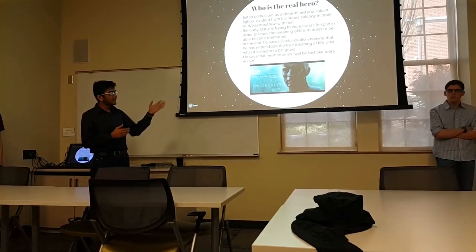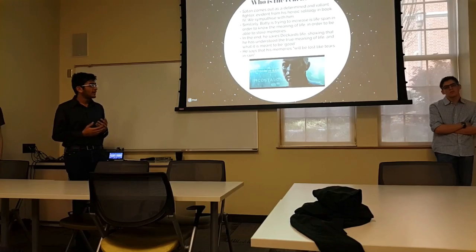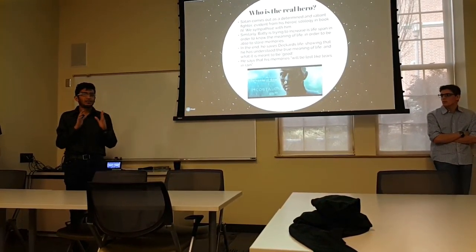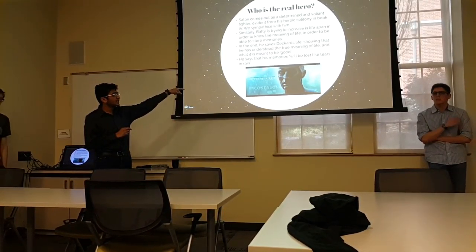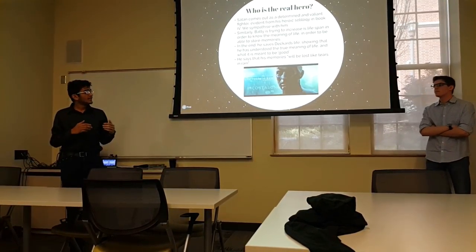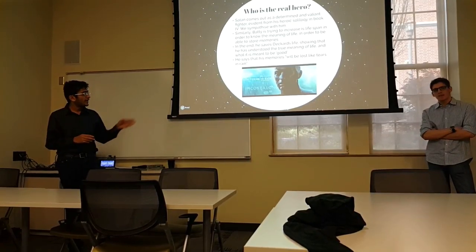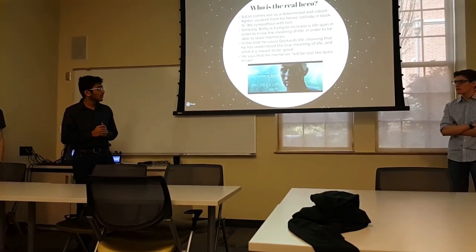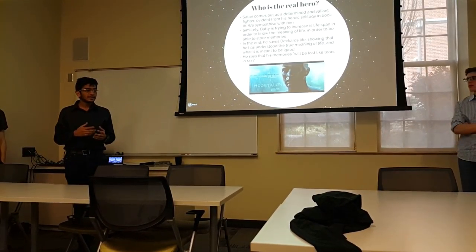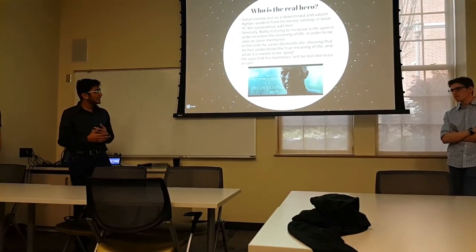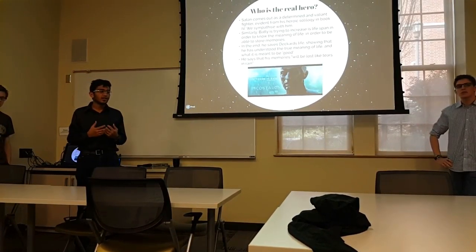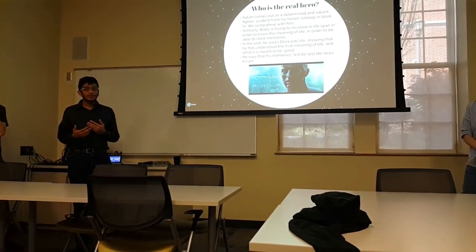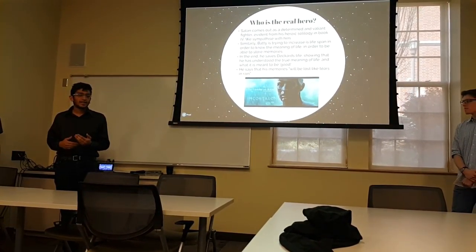Similarly in the film, Batty's only reason to come back to Earth is to gain emotions and learn more about life — that's his main goal. Of course, he has been shown as the villain, very violent and dark like a typical villain. But in the end, in the last scene, he's chasing Deckard and trying to kill him, and then there's a big plot twist: Deckard is hanging from a ledge and Batty could have killed him easily, but instead he decides to save his life. After that, he delivers a famous monologue in which he says his memories will be lost like tears in rain. This is the transformation of Batty into a good character — he has understood the true meaning of life and what it means to be good. After he dies, we start sympathizing with him, and the same question can be raised: whether Batty was the real hero in the film, just as the question is raised in Paradise Lost whether Satan was the real hero.